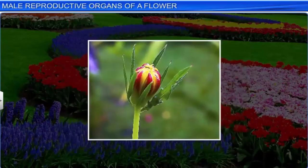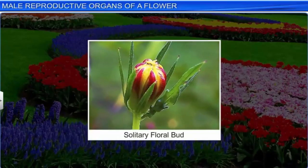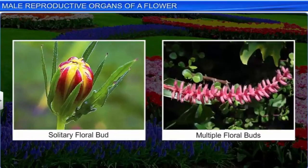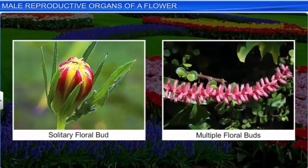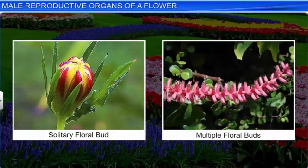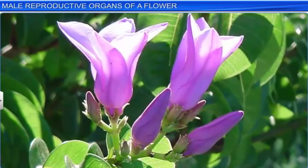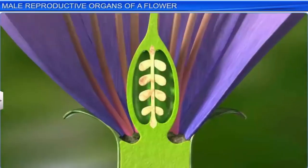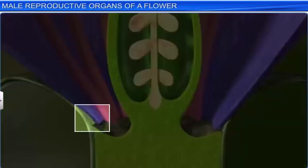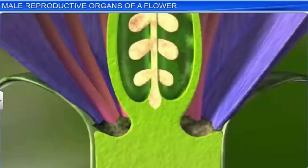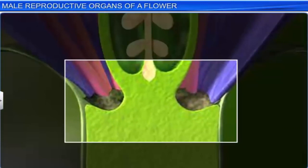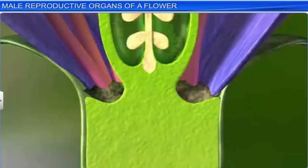This primordium either bears a solitary floral bud or inflorescences that bear multiple floral buds. The buds bloom into a flower — a modified shoot with shortened inter-nodes and nodes. From these nodes arise four modified leaf-like structures, called whorls, which are arranged on the swollen end of a stalk called the thalamus.